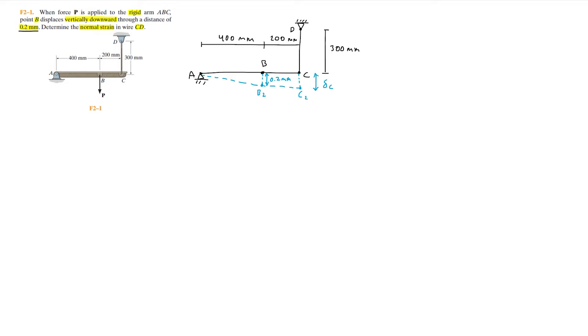What we can do here is focus on this left side of the bar, specifically the right triangle formed by points A and B. I'll just quickly go ahead and redraw this right triangle. This length right here between A and B is 400 millimeters and then the vertical length between B and B2 is 0.2 millimeters.